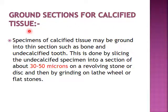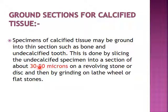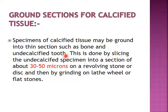A ground section for calcified tissue: the specimen of calcified tissue may be ground into thin sections, such as bone and undecalcified tooth. Undecalcified means without decalcification. This is done by slicing the undecalcified specimen into sections of about 30 to 50 microns on a revolving stone or disc, then grinding on a lathe wheel or flat stone. Without staining, the section is placed on a slide and studied under the light microscope. Ground section is usually used to study enamel structure, while decalcified section is used for dentine, cementum, bone, and enamel that is not fully mature.